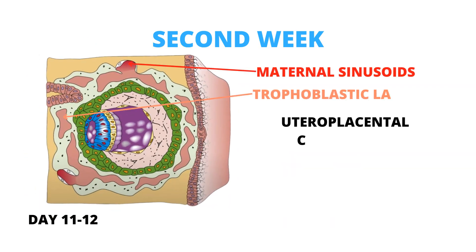By days 11 and 12 of development, the blastocyst is fully immersed in the endometrial stroma and the surface epithelium closes completely. The trophoblastic lacunae of the syncytiotrophoblast form a remarkable intercommunicating network, and cells of the syncytium penetrate deeper into the stroma, eroding the endothelial lining of the maternal capillaries, causing maternal blood to enter the lacunar system. The capillaries that are congested and dilated are known as maternal sinusoids. As the trophoblast continues to erode more sinusoids, maternal blood begins to flow through the trophoblast system, establishing uteroplacental circulation.